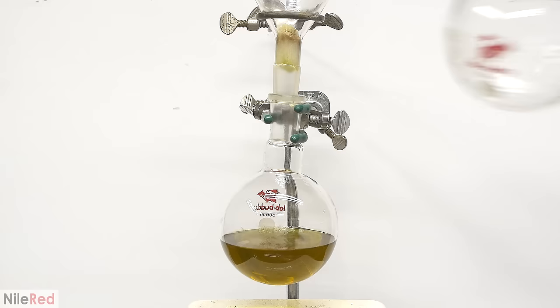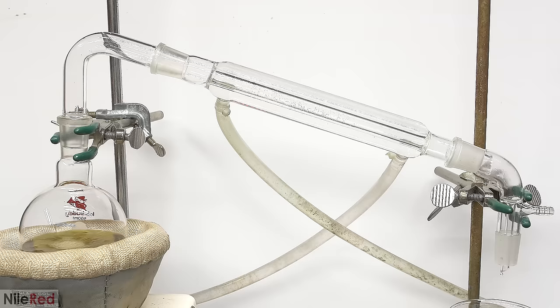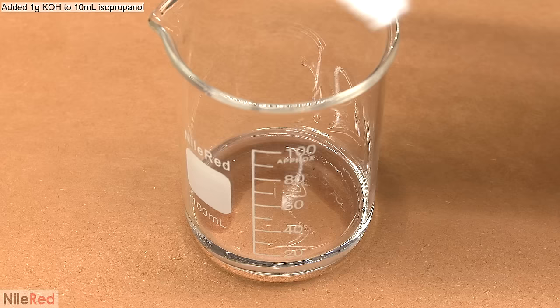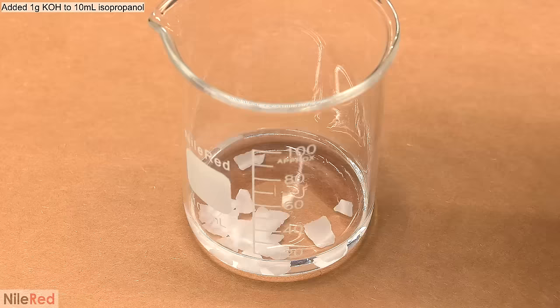I packed a cotton ball into a funnel and I filtered it through. Once everything had passed through, I washed the round bottom and the funnel with a little bit of warm isopropanol. I took away the funnel and I added a magnetic stir bar to the flask. I now need to get rid of most of the isopropanol and to do this, I use a simple distillation. In the meantime, I prepare a base solution.